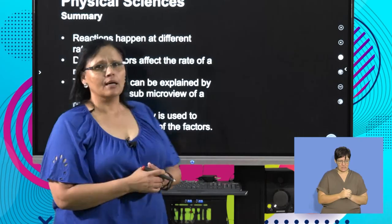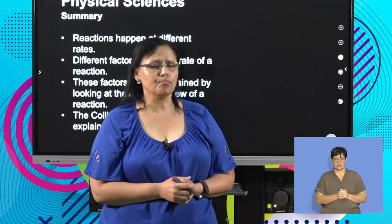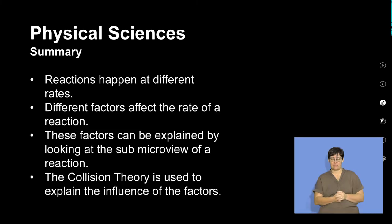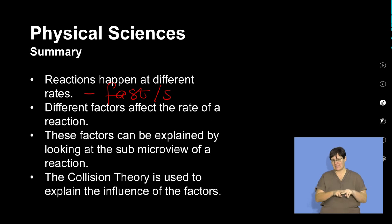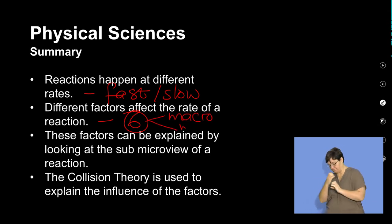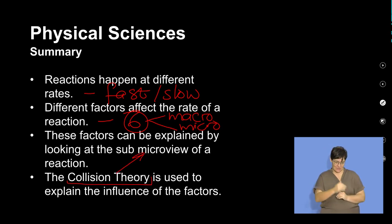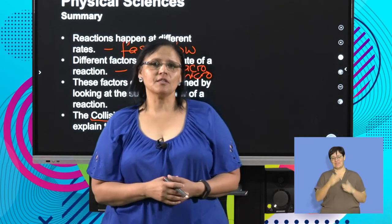We also spoke about the nature of the products — what group they are in and their reactivity. In closing, reactions happen at different rates — they can be fast or slow — depending on what we're reacting. There are six factors that affect the rate of a reaction, and we spoke about both macroscopically and microscopically how they affect the reaction. These factors can be explained by looking at the submicro view of a reaction and the collision theory. Thank you.